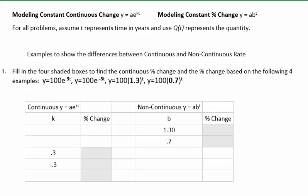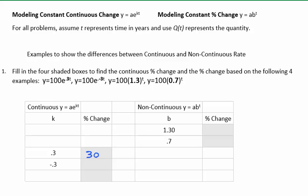Let's get a hang of how these equations work. In the first example, notice the coefficient on t, normally called k, is 0.3. In the second example, the k value is negative 0.3. To find the continuous percent change, you need only move the decimal to the right twice. Doing so, I get 30. The fact that 30 is positive means growth of 30%. With the negative k value, moving the decimal gives negative 30%, meaning it's declining at a continuous rate of 30%.